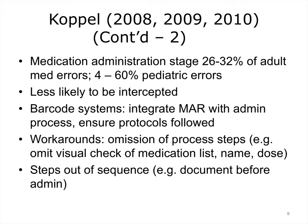Koppel's studies show that around one-third of medication errors occur at the administration stage in adults. Barcode systems integrate a medication administration record, MAR, with administrative processes ensuring protocols are followed. However, in observational studies, he found that staff use workarounds, omitting process steps such as visually checking the medication list, name, and dose. Sometimes a workaround involves carrying out the steps out of sequence, such as documenting before administration instead of after.